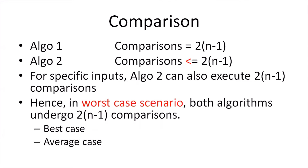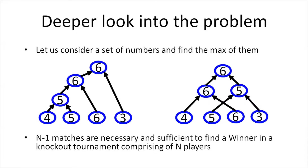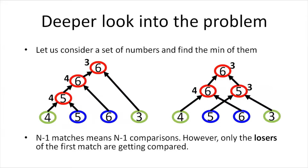We can refine this algorithm by reducing the number of comparisons, since comparison is a costly operation. One refinement is that the check for minimum will execute only if the condition for maximum fails — if a number fails to be a maximum, only then can it possibly be a minimum. Thus the number of comparisons will be less than or equal to 2(n-1). However, in the worst case — when all elements are equal — both algorithms still require 2(n-1) comparisons. This scenario is similar to a knockout tournament: the winner is the highest number, and only the losers of the first round need to be compared for the minimum.